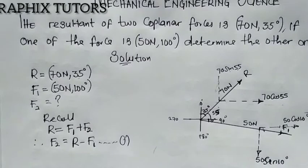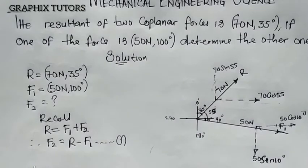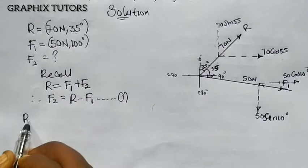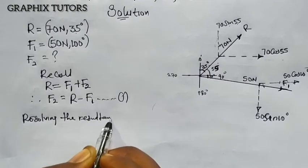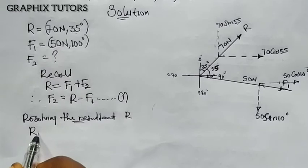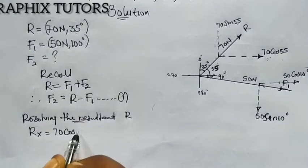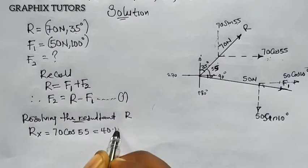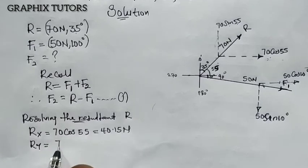Now let's proceed. We start by resolving the resultant force. The resultant along the x-axis, Rx, gives us 70 cos 55, which equals 40.15 newton. The resultant along the y-axis, Ry, gives us 70 sin 55, which equals 57.34 newton.